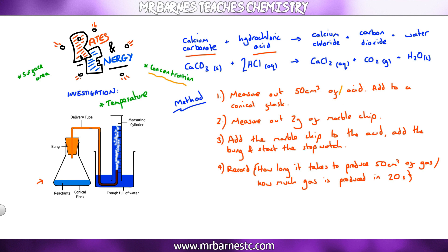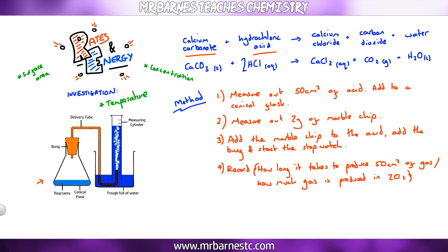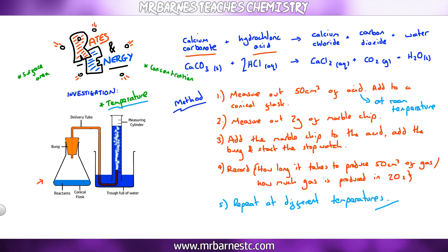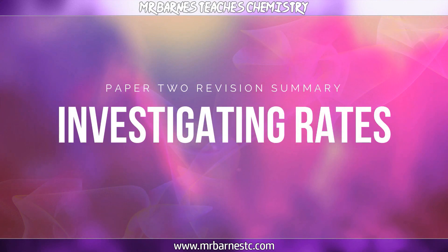For concentration, choose a concentration such as 0.1 molar, then repeat with different concentrations. For temperature, start with 50 cm³ of acid at room temperature and repeat at 30, 40, 50 degrees, and so on. If you increase surface area, concentration, or temperature, you will see a faster rate of reaction — more gas collected in a certain time.